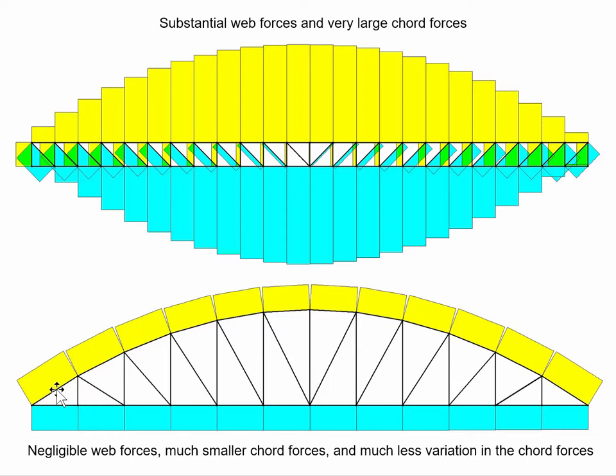The shear forces in the bow truss are actually being taken up in the ever-increasing slope of the top cord members, and in this particular simulation I've given the top cord the perfect shape so that in fact the web forces are zero.